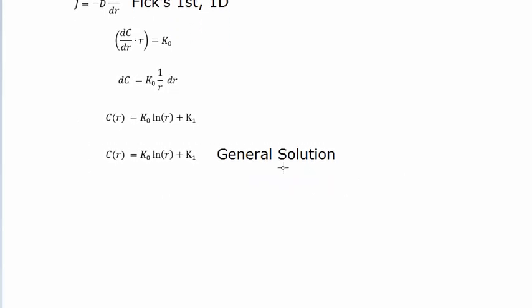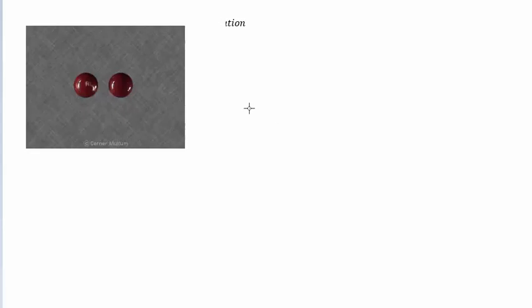We're not going to worry too much about the boundary conditions in this video — those can get pretty involved. The other example we need to do is the generalized mass balance for a spherical drug diffusion case. Say your drug comes in spherical pills instead of capsule-shaped pills; then we model it the same sort of way.